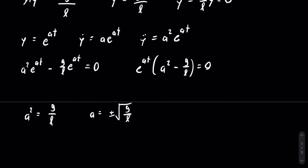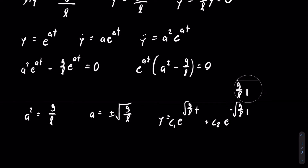Now that we have a, we have y, or the solution to the differential equation. For linear homogeneous DEs, we set y equal to the linear combination of both solutions. Because there are two solutions for the positive and negative values of a, we get that y equals C1·e^(sqrt(g/l)·t) plus C2·e^(-sqrt(g/l)·t).